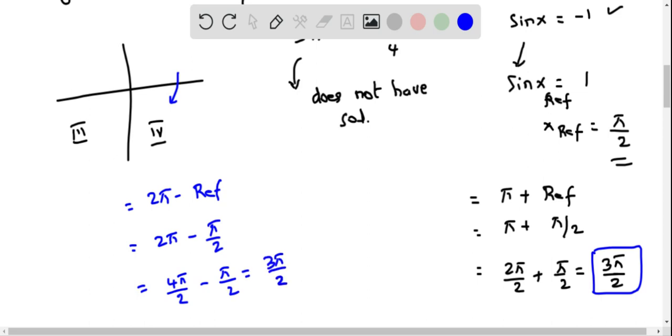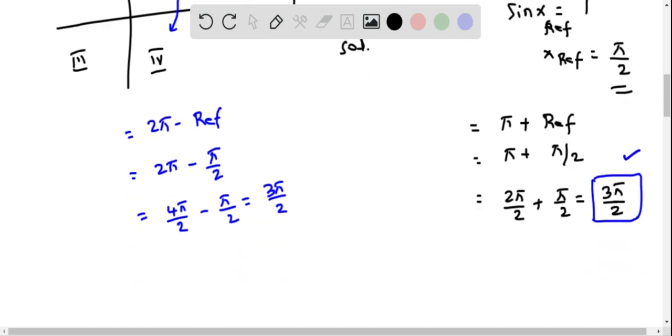So therefore the only solution to this trigonometric equation is 3π/2. So we write x equals 3π/2 as the solution of this equation.